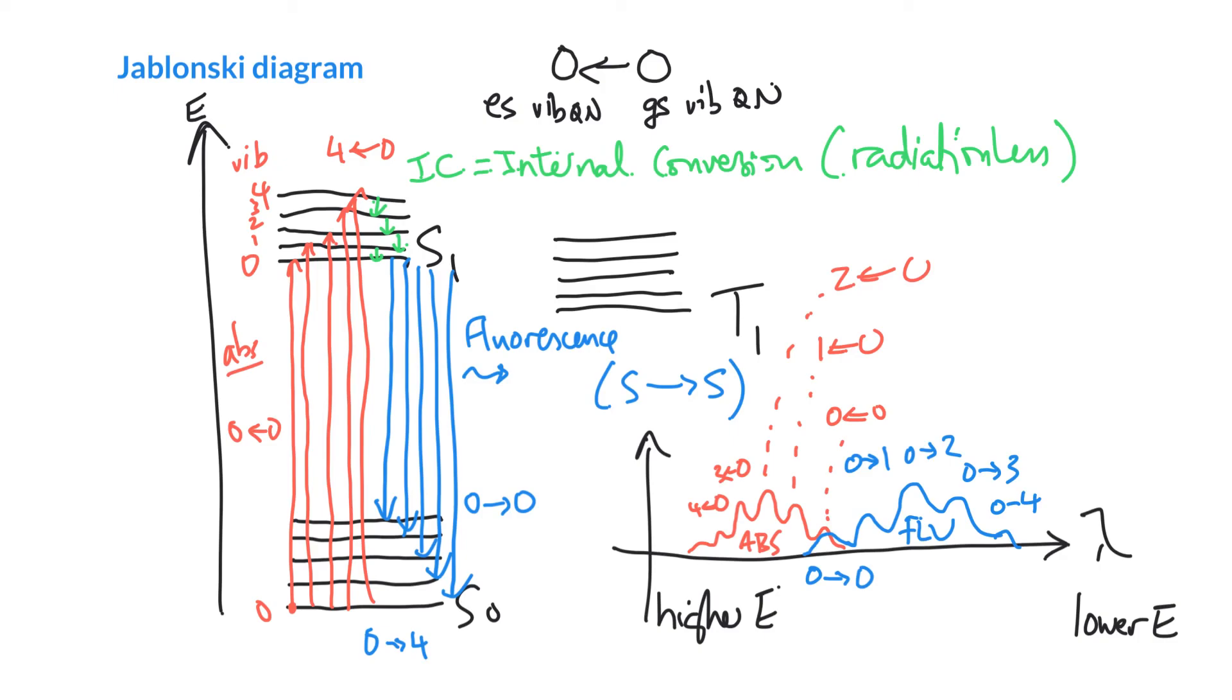Sometimes the vibrational structure is not very well resolved. So sometimes the spectrum looks kind of more like that for the absorption and something like that for the fluorescence. So sometimes you don't see that nice, fine structure. It's kind of nice when you do.